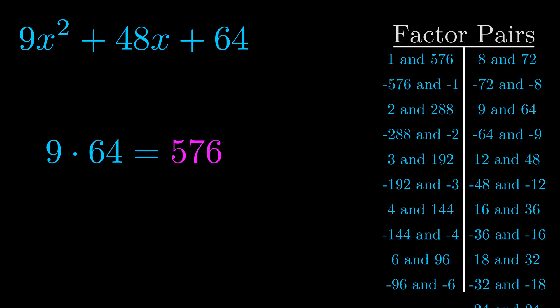The b value is the coefficient on the x term. That's the middle term, the one that we haven't done anything with yet. And really this is the only factor pair that we need.